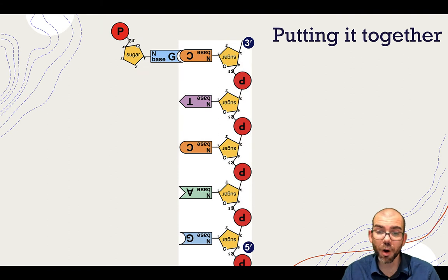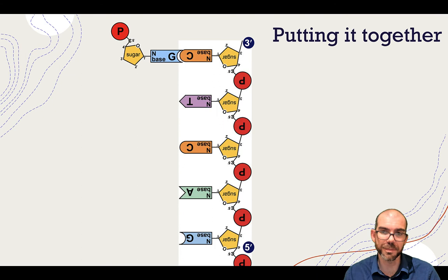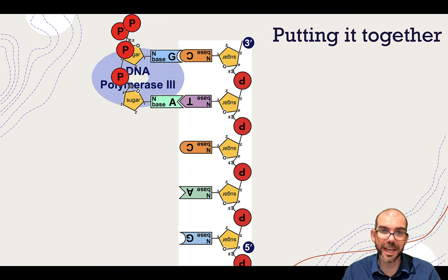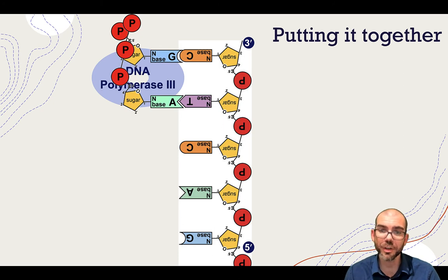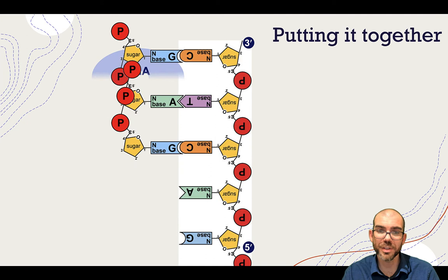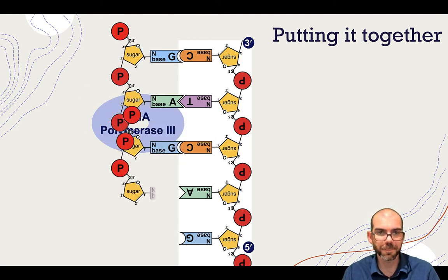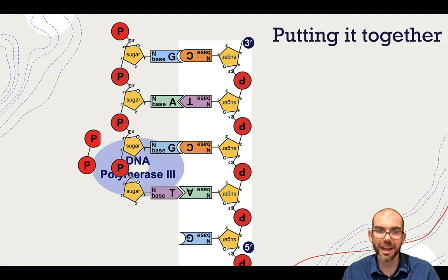So let's put this all together. I have my parental strand on the right, this time with 3' pointing up and 5' pointing down. Let's build a new complementary strand per the semi-conservative model. Helicase has already opened the double helix, so now polymerase III comes in and attaches new nucleotides to complementary base pairs. Here's an ATP, so polymerase breaks off those two phosphates and uses that energy to form the phosphodiester bond — then does the same for guanine, thymine, and so on.